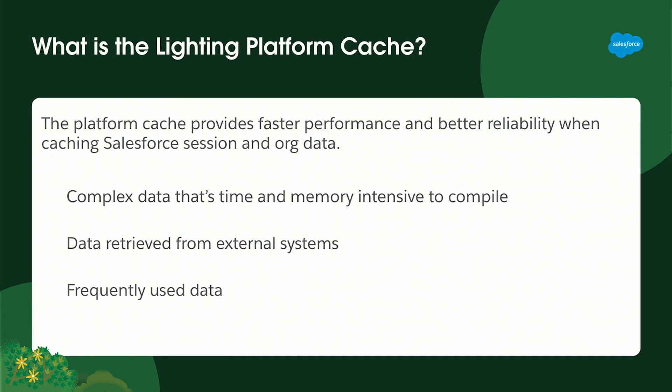So what is the Lightning platform cache? It provides faster performance — it is a cache layer. The idea is that you can put data in the cache, and when you retrieve it, it's going to be faster than through traditional methods. For our scenario, that's complex data that's time and memory-intensive to compile. We're running about 25 SOQL queries and compiling a very large JSON structure to be returned to the end user.